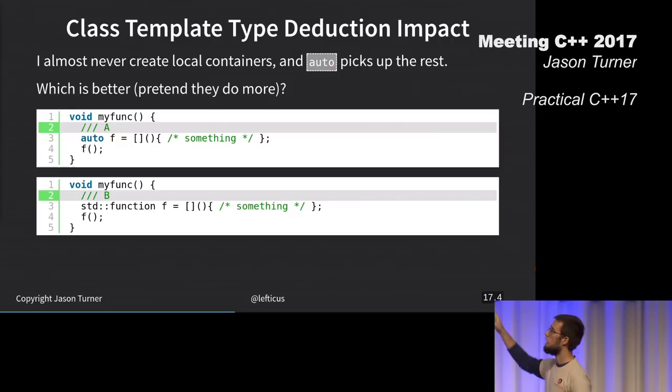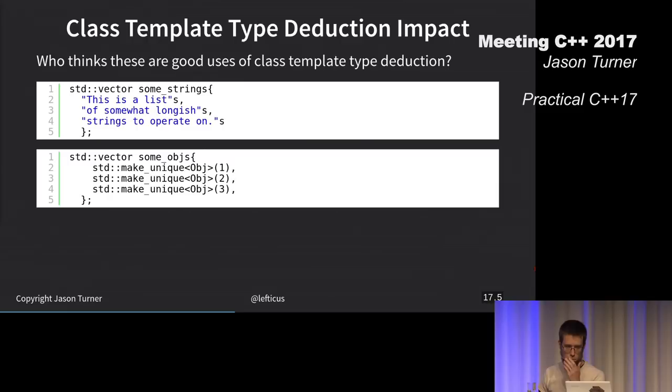Std function is not trivial and compounded if we were playing with bind or something. Does anyone think that either of these is a good use of template type deduction? Is anyone going to defend? I'm really, I'm waiting here until someone gives me something.